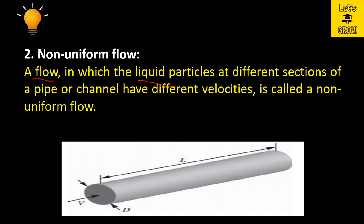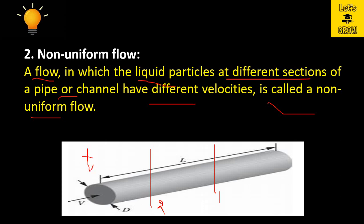A flow in which the liquid particles at different sections of a pipe or channel have different velocities is called a non-uniform flow. If we have two cross-sections and measure velocity or depth of flow at the same time at both sections, and the velocities or depths are different at both sections, then the flow is called non-uniform flow. Here, time is constant and the parameters vary with different cross-sections.